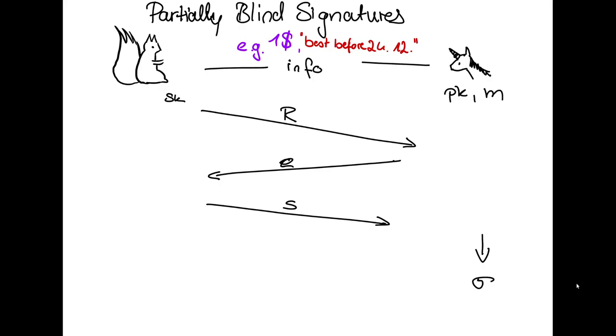We consider a three-move partially blind signature scheme, which means they send back and forth in total of three messages.